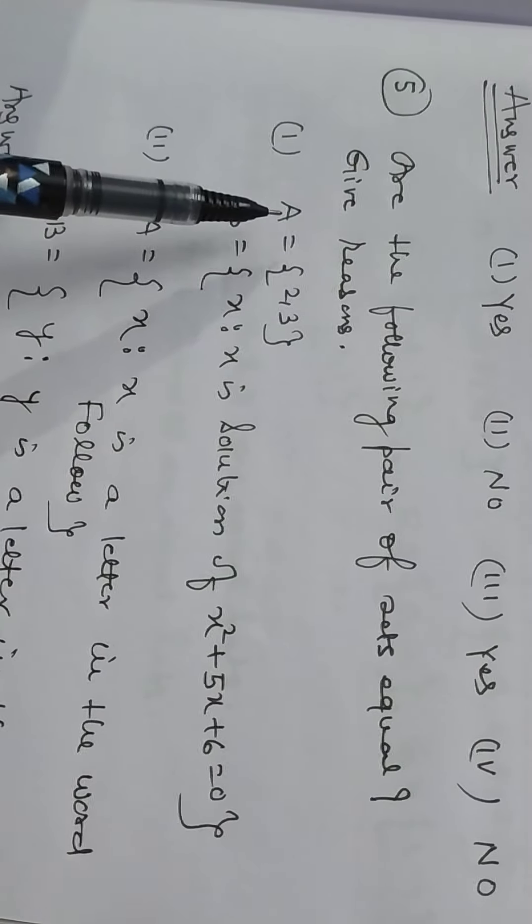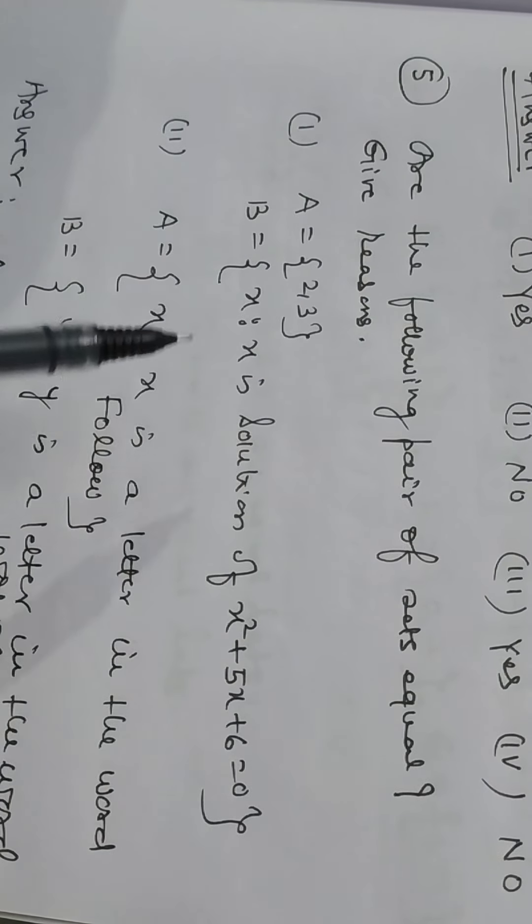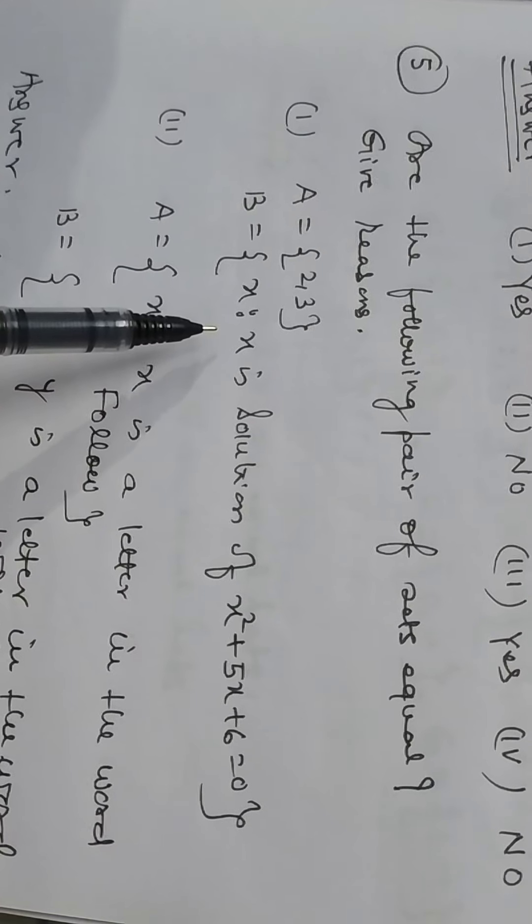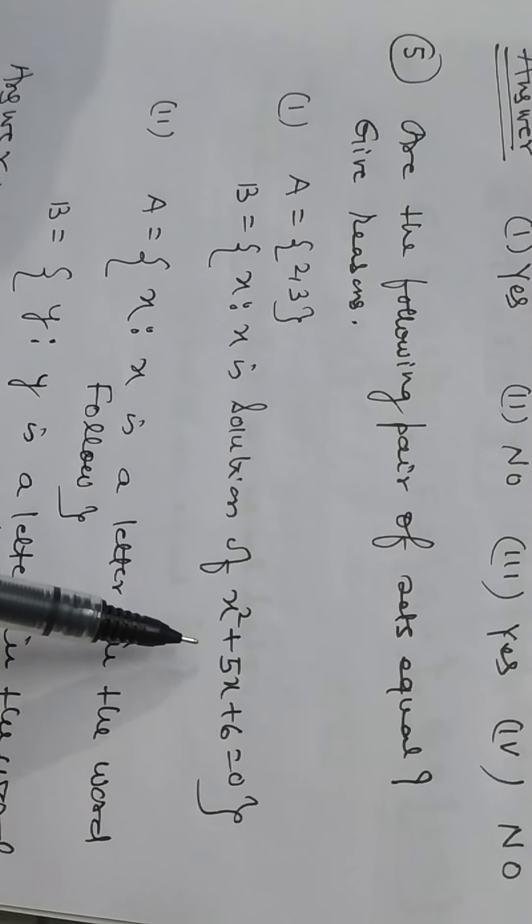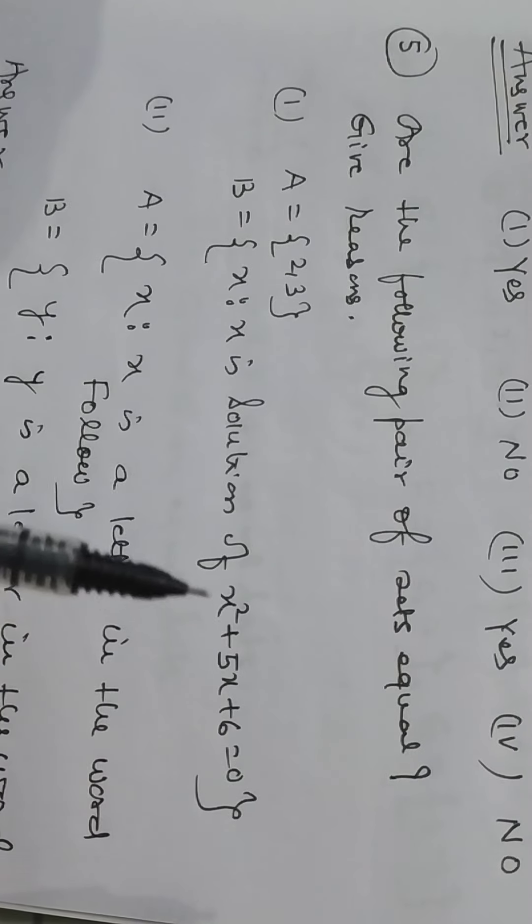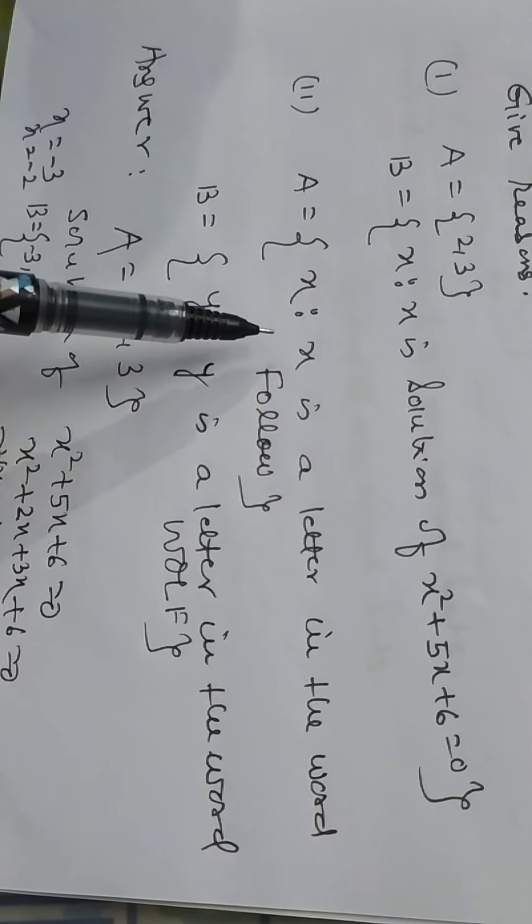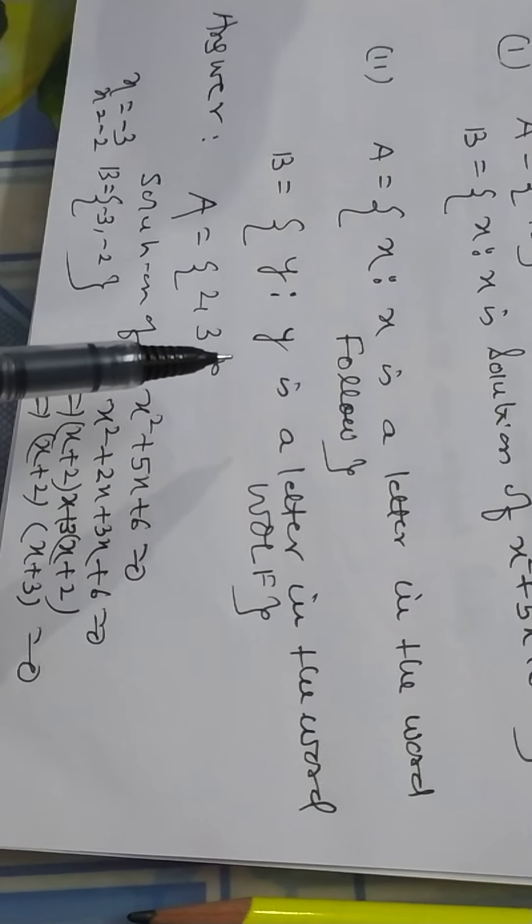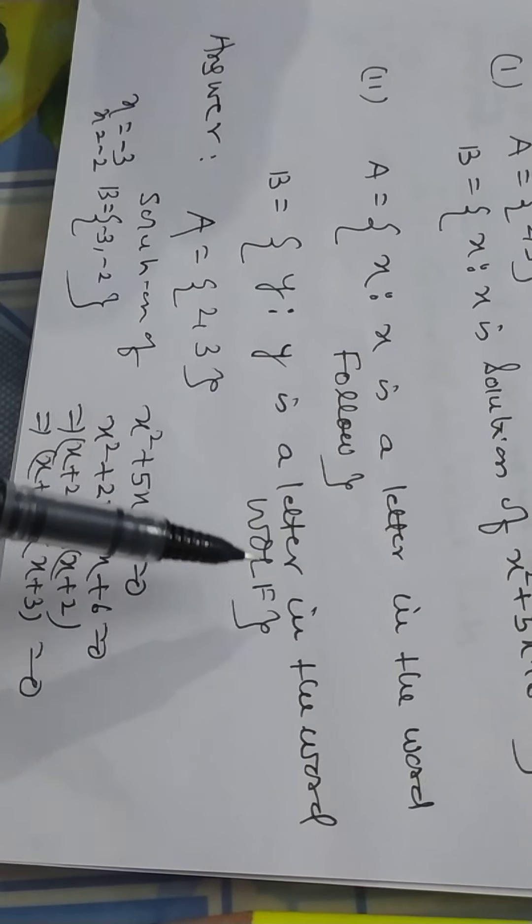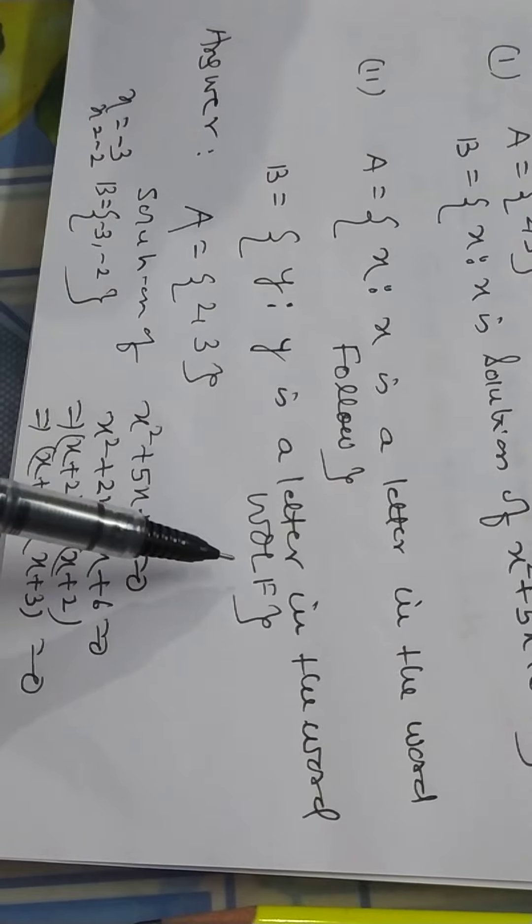Now problem number 5. Are the following pair of sets equal? Give reason. A: collection of element 2, 3. B: x is a collection of element x such that x is a solution of x square plus 5x plus 6 is equal to 0. Second, A: collection of element x such that x is a letter in the word follow. B: y is a letter in the word wolf.